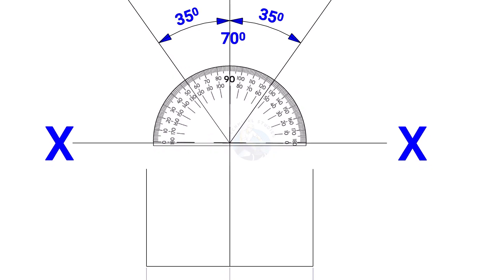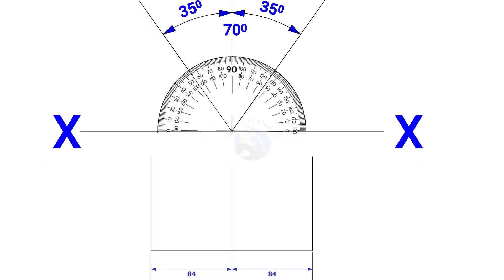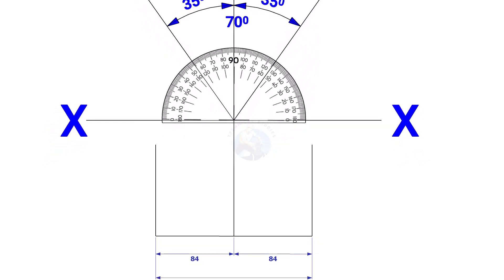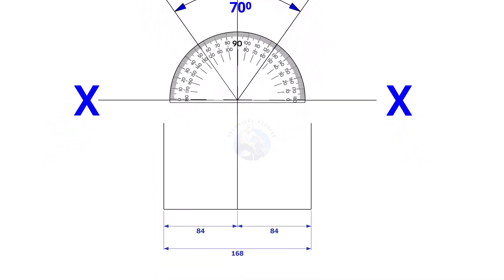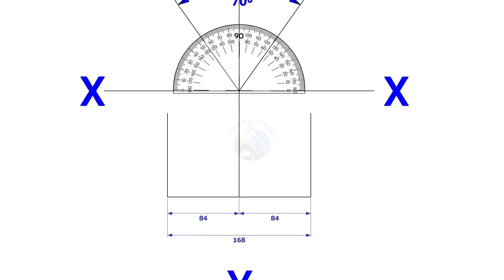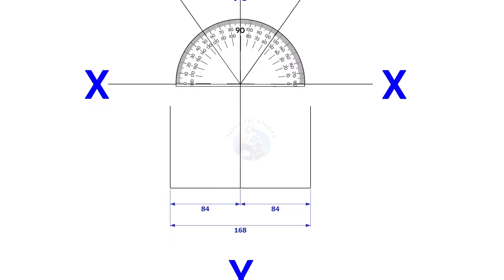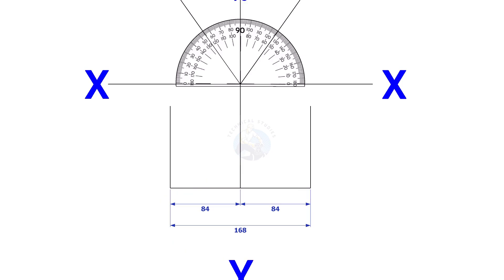Mark 84mm each on both sides of the YY axis — that is the outside diameter of the header. Draw perpendicular lines on these marks, as shown.